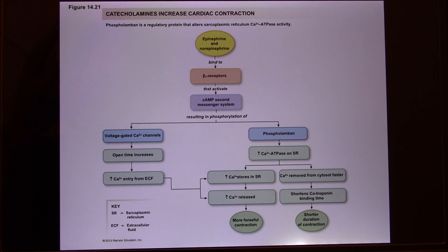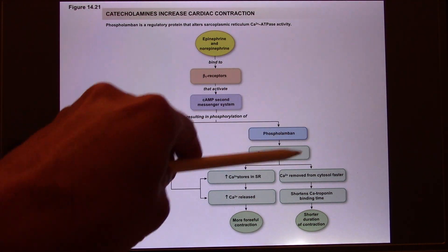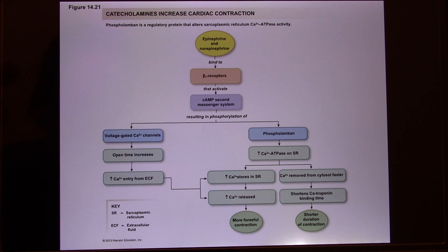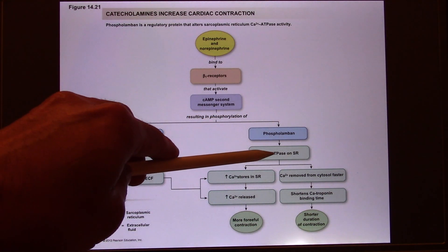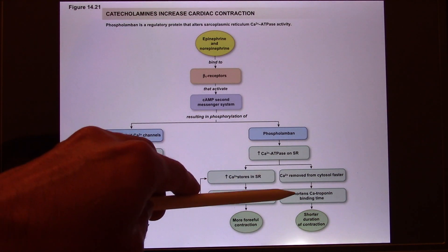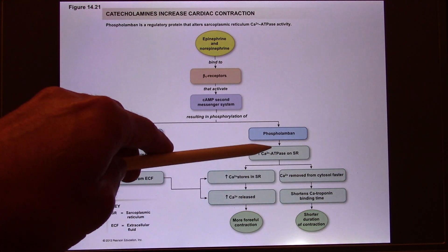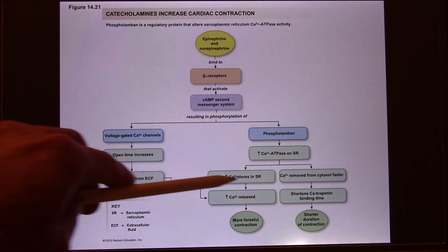The system can also work on the SR. On the SR, you have phospholamban, which is a protein. Phospholamban works on the calcium pump. The calcium pump uses ATP as the energy source. It pumps calcium from the cytosol back to the SR. The quicker you remove calcium, the more efficiently you can release calcium again, and you also put more calcium into the SR.